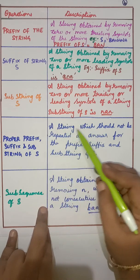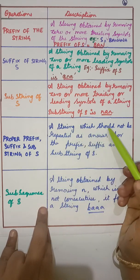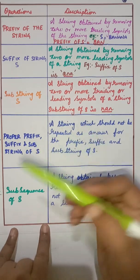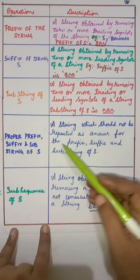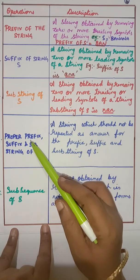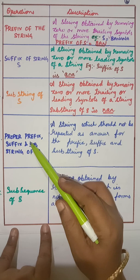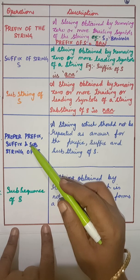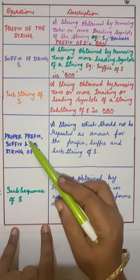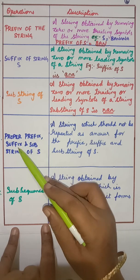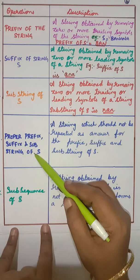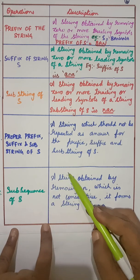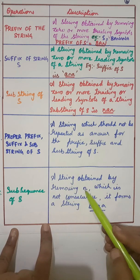Proper prefix, suffix, and substring of s: a string which cannot be repeated as the answer for prefix, suffix, or substring. For all three, the same answer should not be repeated — then it is called a proper prefix, proper suffix, and proper substring of s.